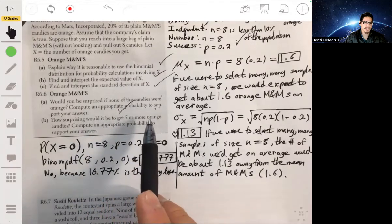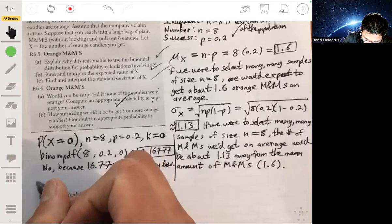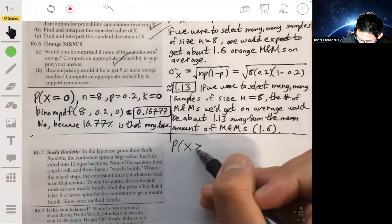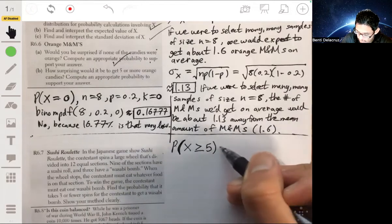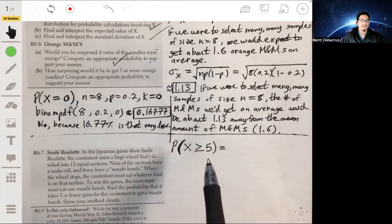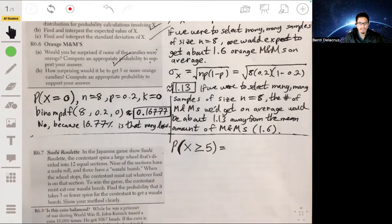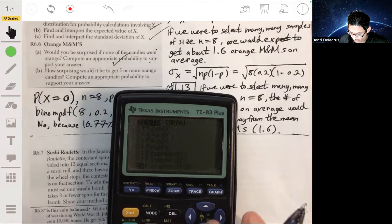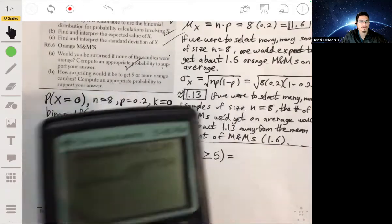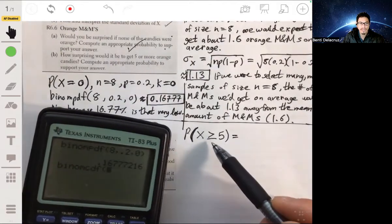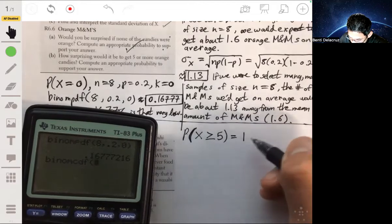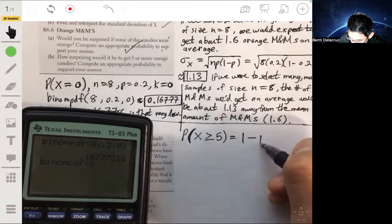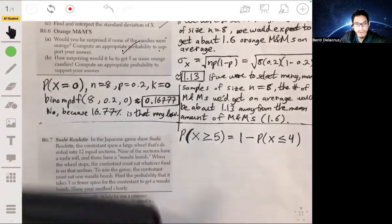How surprising would it be to get five or more orange candies? What would be the probability that X is greater than or equal to five? You can use the binomial CDF function in your calculator. This is a cumulative density function, so it does less than or equal to some number. Be careful, though, because this is greater than. What we want to do is find the probability that X is less than or equal to four and subtract that from one. Because the probability that X is greater than or equal to five equals one minus the probability that X is less than or equal to four.